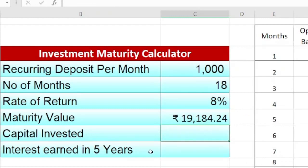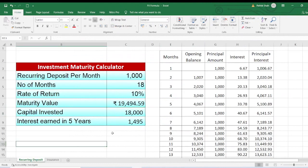Now I will show how much capital I have invested. It is very easy. I will just select this monthly installment times number of months. It comes to 18,000. Now how much interest you have earned? We can simply do maturity value minus total capital invested. So 1,184 you have earned as interest. If the interest rate is changed to 12%, this table will be all updated automatically. Friends, if you have learned something up till now, please like the video.